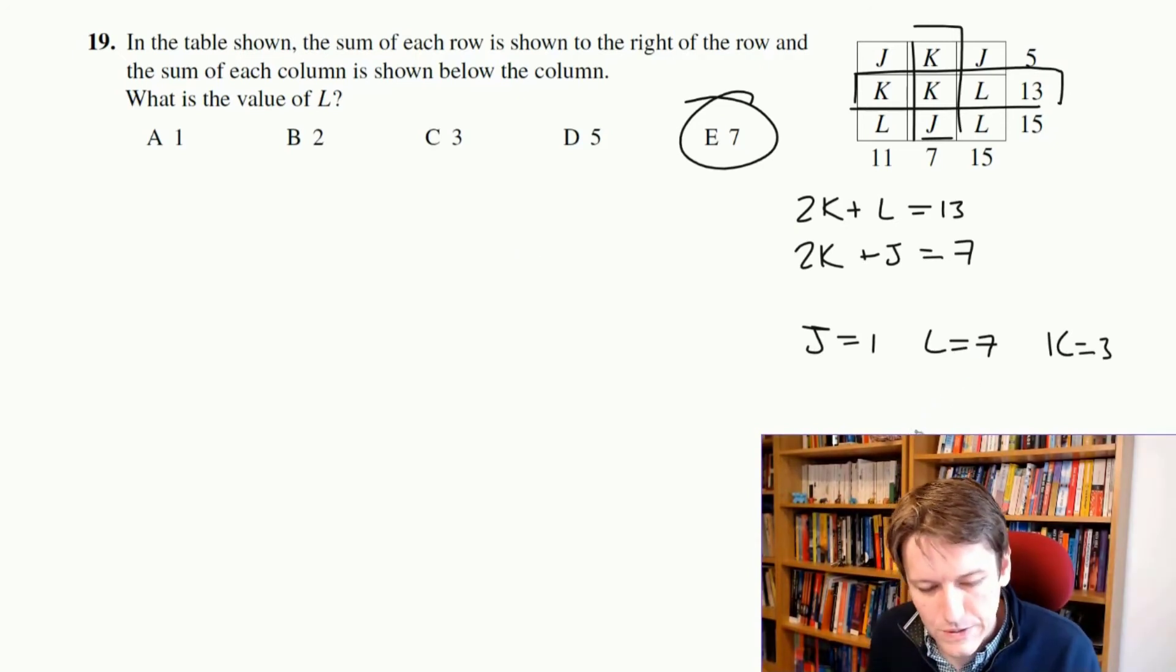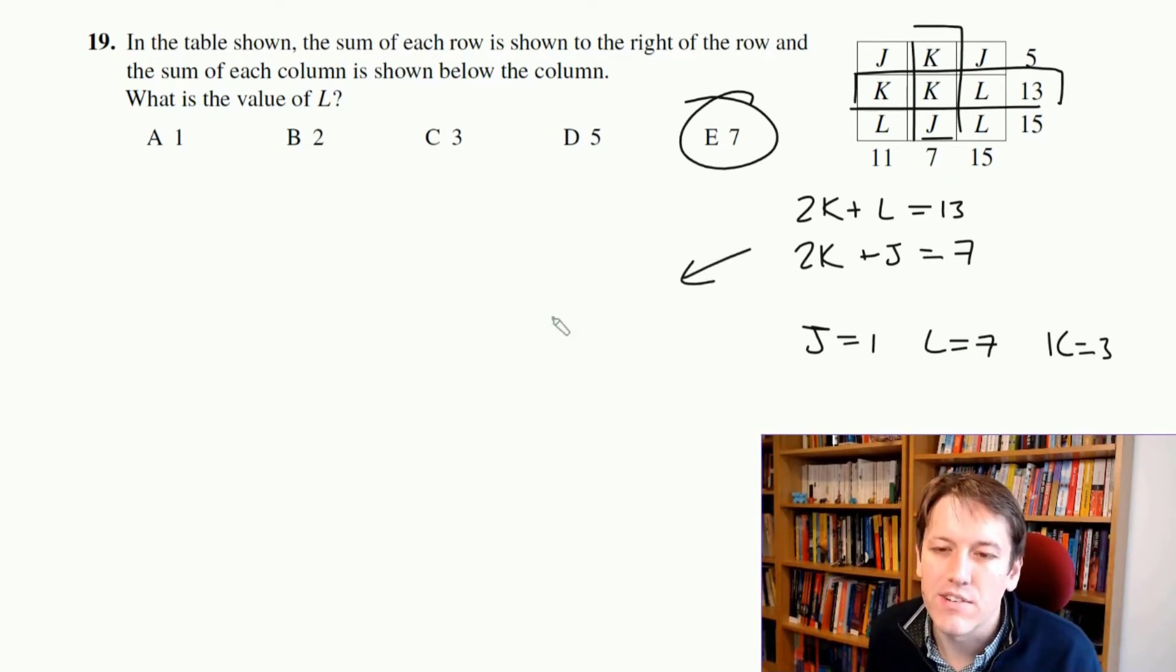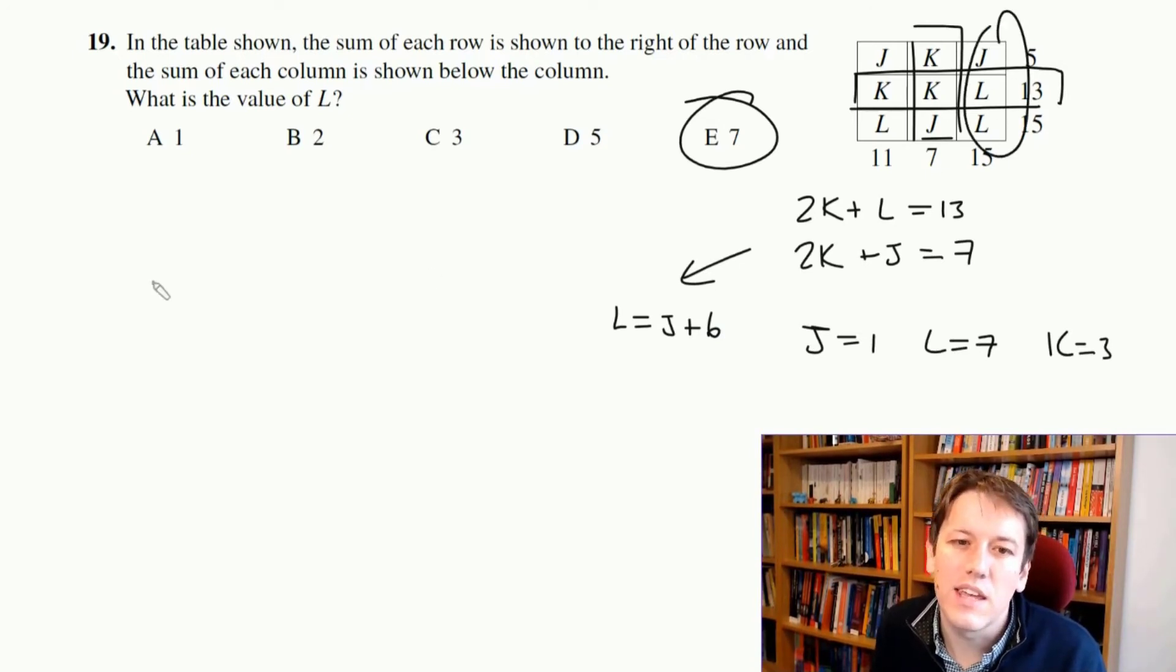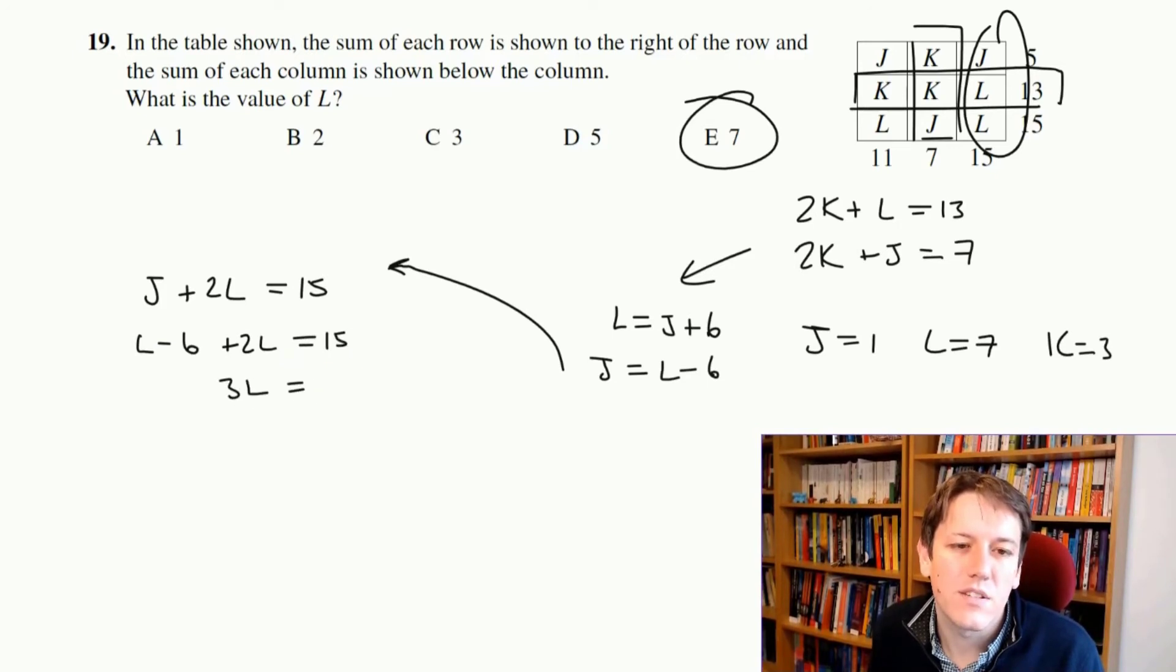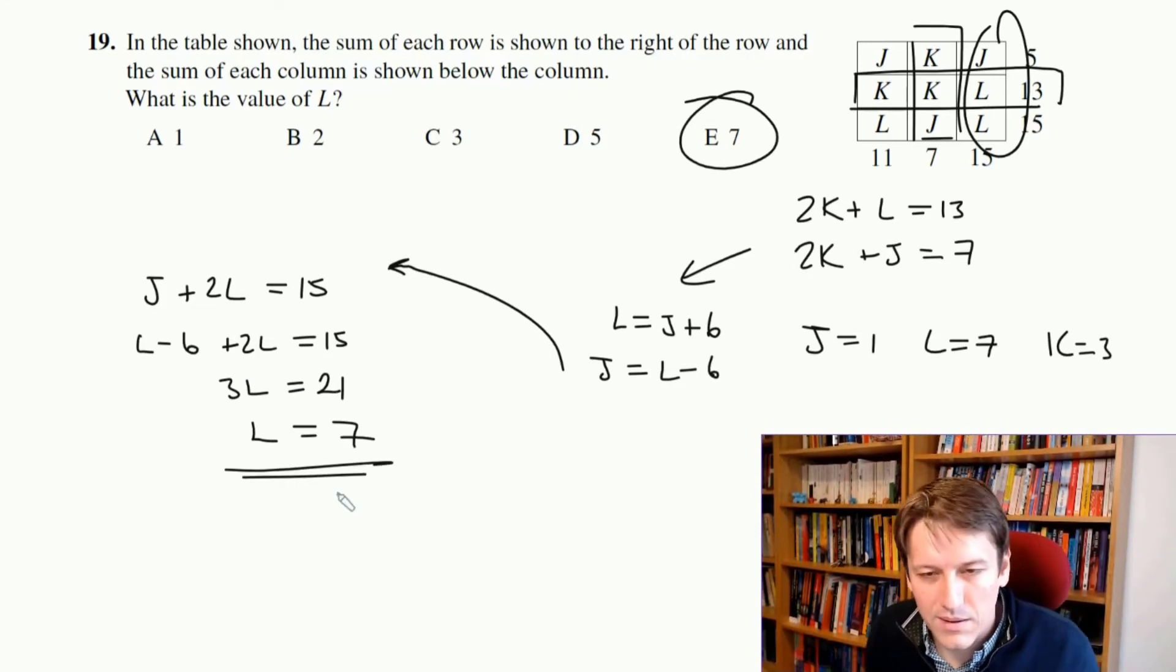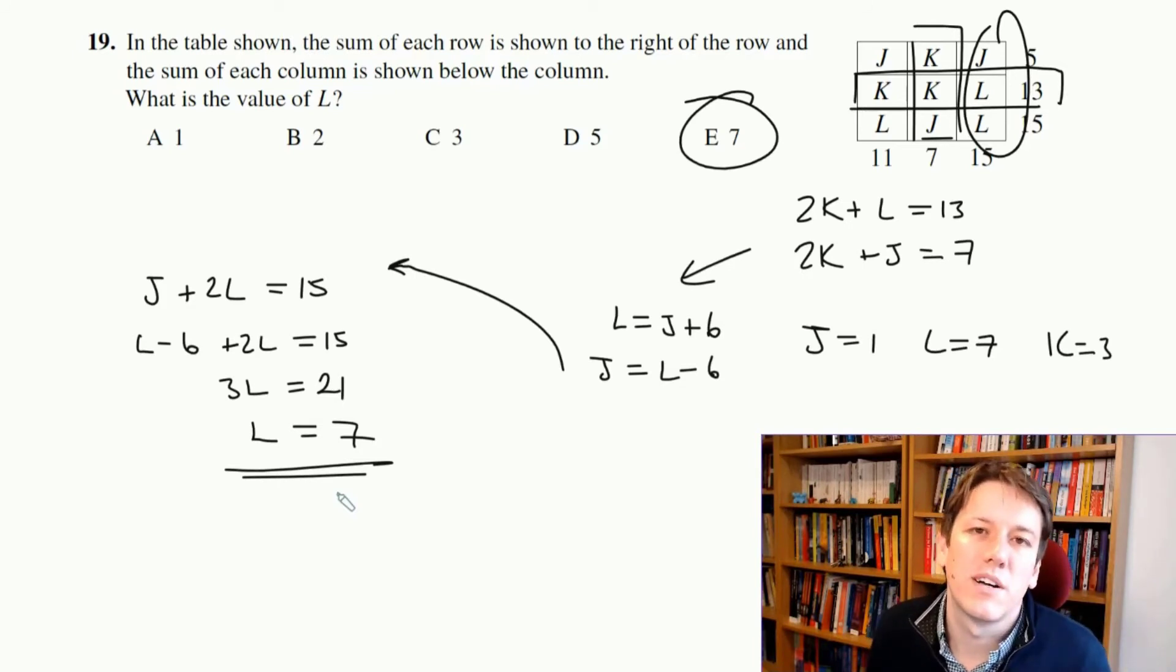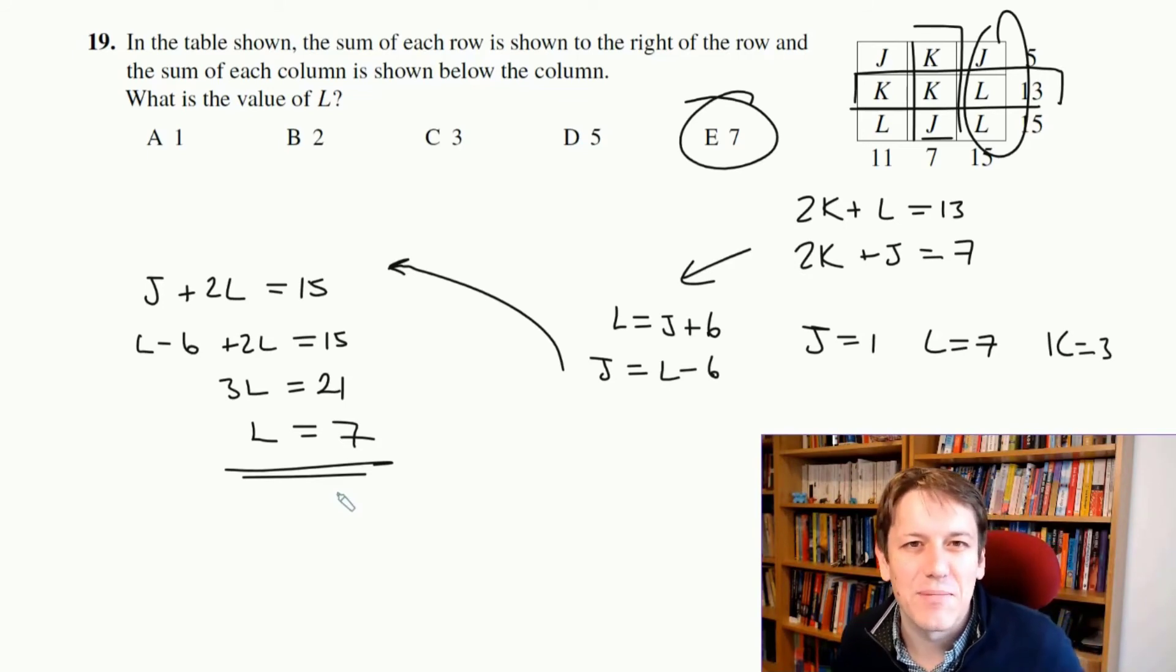If you don't want to do it quite so sneakily as that, of course, we could put those together and say, well, I know this means that L is J plus 6, and then I could just find a column that just has J and L in it. So like this one here, I can say J plus 2L equals 15. But if L is J plus 6, then J is L minus 6. And if I substitute that in here, I get L minus 6 plus 2L equals 15. So 3L is 21. And so again, then L is 7, as we found before. So you can deduce it absolutely for sure there. But it's the maths challenge, you know, part of the game we're playing here is to try and get through the questions quickly and use whatever tricks we can to give ourselves time to think about the later questions.